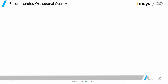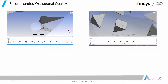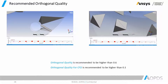Now, what is the recommended orthogonal quality? Just like any other element quality criterion, it is important and it is dependent on the simulation that you are doing. If it's a CFD simulation or a structural analysis simulation, it's going to be different. As a rule of thumb and based on experience, we recommend for FEA analysis to keep orthogonal quality higher than 0.6, and for CFD analysis to keep it higher than 0.1. Thank you very much for watching. Make sure to subscribe to our YouTube channel for more videos.